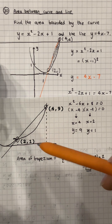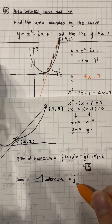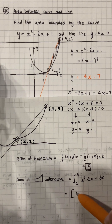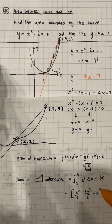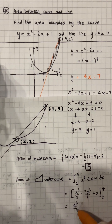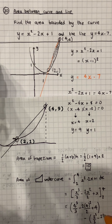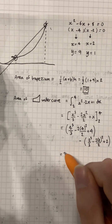We've also got the area underneath this curve, which is going to be an integral from x equals 2 to x equals 4 of the curve itself. We integrate by adding 1 to the power and dividing by the new power, evaluating between 4 and 2 — putting 4 in first, then subtracting the same expression with 2. Working this out, we find it's equal to 26 over 3.